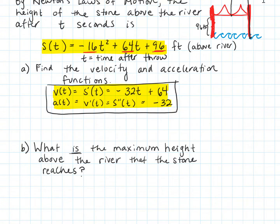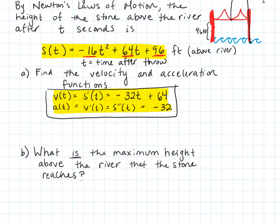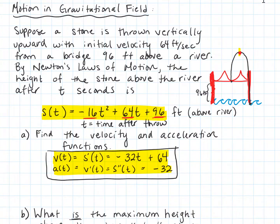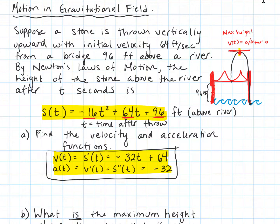Now we'll use those to answer follow-up questions. What is the maximum height above the river that the stone reaches? Intuitively, that is the point when the velocity equals zero. When we have that horizontal tangent line, when the velocity is equal to zero, that gives us the max height. The stone starts off thrown upward with some speed, but gravity decreases that speed as it goes up until it hits that moment when it has no speed — that's at the apex of the throw.